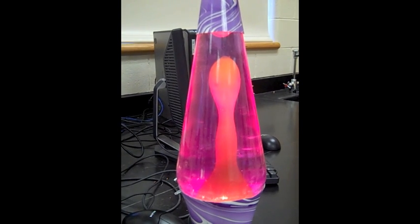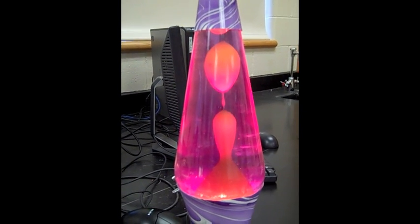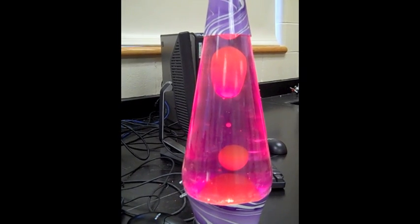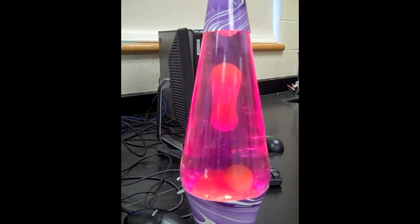In the lamp, there are two liquids which are very close in density and insoluble to one another. The heavier liquid absorbs the heat produced by the bulb, and as it heats up, it expands.